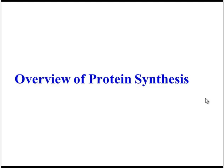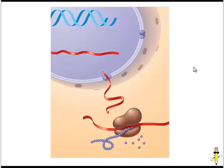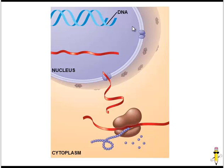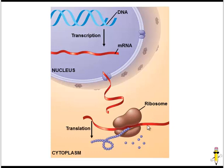Now let's take an overview of protein synthesis. There are two main steps. Here is the nucleus of a cell, and outside the nucleus is the cytoplasm. The first step in protein synthesis is for DNA to be transcribed into a molecule of mRNA. So during transcription, DNA is used to make a single-stranded mRNA molecule. That mRNA molecule will then leave the nucleus through the pores and find itself a ribosome.